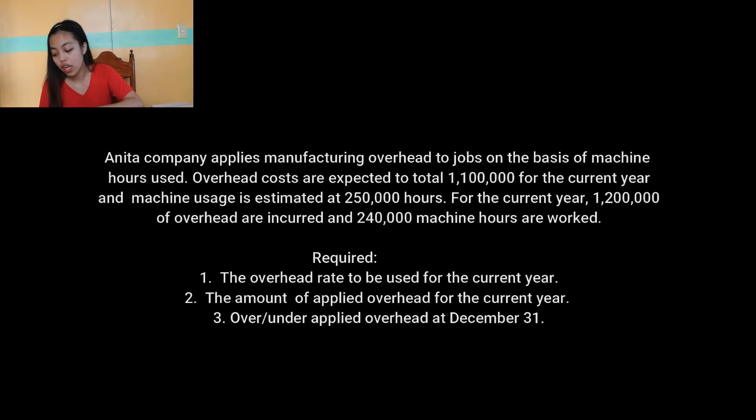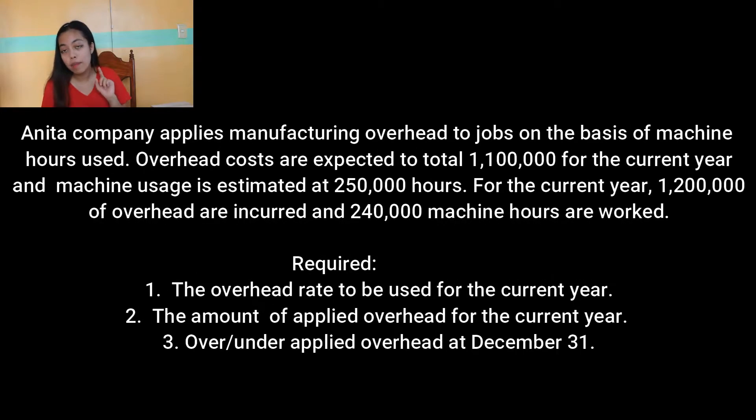So, number one problem. Anita Company applies manufacturing overhead to jobs on the basis of machine hours used. Overhead costs are expected to total 1,100,000 pesos for the current year and machine usage is estimated at 250,000 hours. For the current year, 1,200,000 pesos of overhead are incurred and 240,000 machine hours are worked.